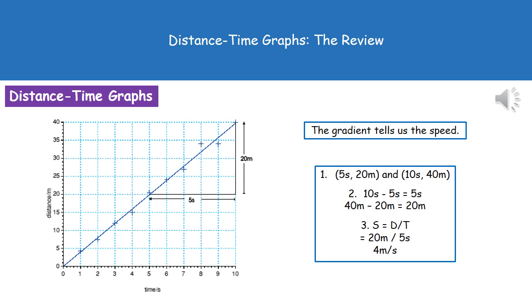The only other thing we need to know how to do with distance-time graphs is to calculate the speed. The gradient of the line is the speed. The kind of question you might get is: what is the speed of the object between 5 and 10 seconds?